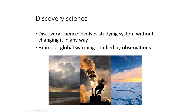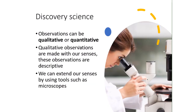Discovery science involves studying a system without changing it in any way. For example, studying global warming by observation, or astronomy — when you look at the sun, planets, and stars, you are just observing without changing what you see. Observations in discovery science can be qualitative or quantitative. In qualitative observations we use our senses — sight, hearing, touch, smell, taste (though we shouldn't taste things in the lab without a safe environment). These observations tend to be descriptive.